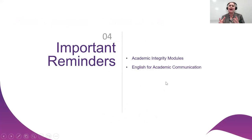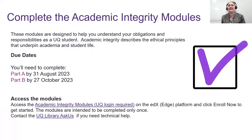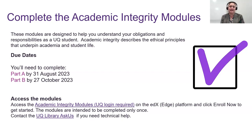There are a few other important things for students to know. You must complete the academic integrity modules before their due dates — these modules help you understand your obligations and responsibilities as a UQ student, covering the ethical principles that underpin academic life. Complete Part A by the 31st of August and Part B by the 27th of October. Access these modules on the edX Edge platform and click 'Enrol Now' to get started. The modules are intended to be completed once. If you have trouble accessing them, the UQ library can help — they have a desk in the library and an online platform for questions.